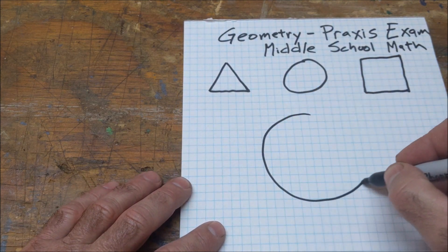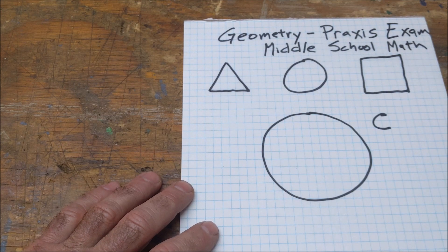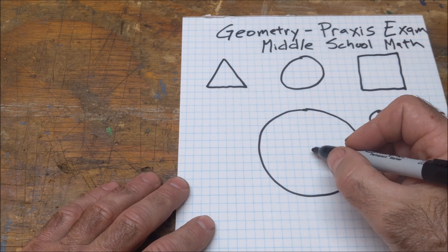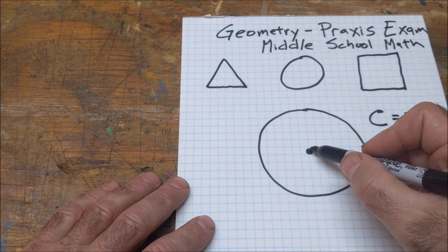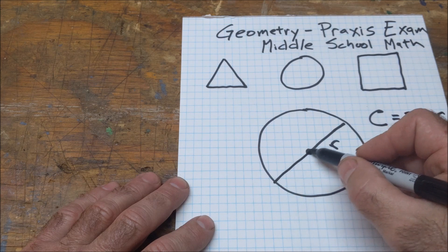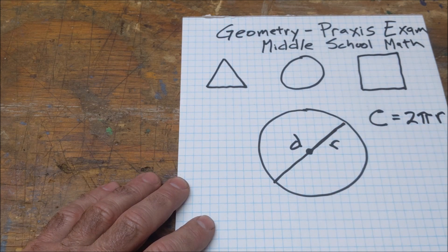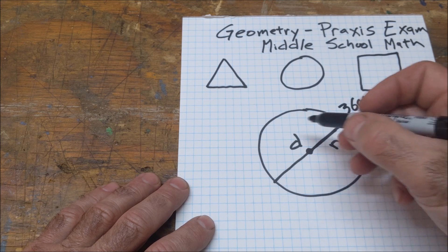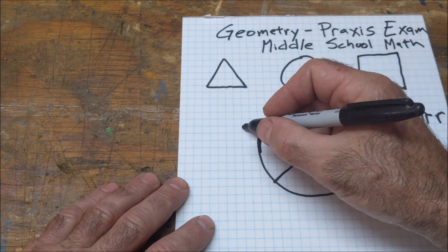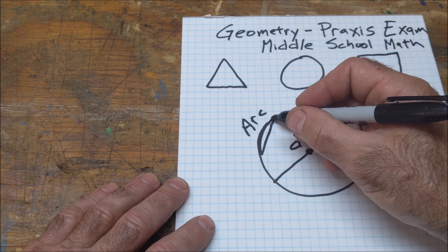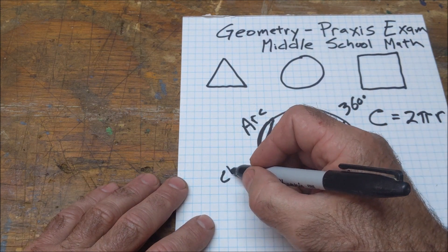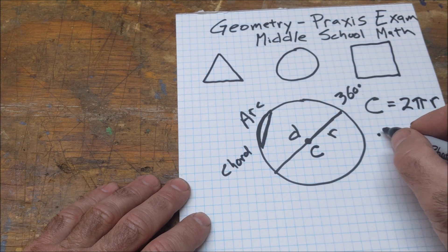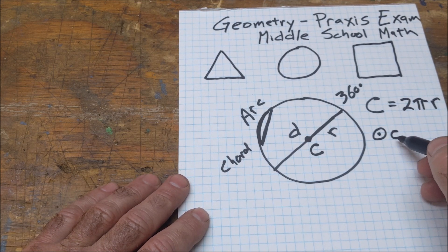All the way around the outside of a circle is called the circumference, and circumference is equal to 2 times pi times the radius. Every circle has a center; from the center out is your radius. All the way across the circle at any point is a diameter. Around the outside is a total of 360 degrees. A piece of the circle is called an arc, and a chord goes across the interior. Sometimes you'll see the notation of a circle centered at point C.